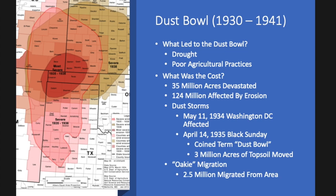Some 35 million acres of land were devastated as a result of the Dust Bowl and 124 million acres affected by wind erosion. Some of the worst dust storms occurred on May 11, 1934, when dust from the Midwest hit Washington D.C., New York, and other places, even into London. Then in April of 1935 — so-called Black Sunday — the term "Dust Bowl" came from a newspaper article describing a dust bowl in the center of the United States. During that Black Sunday blow, something like 3 million acres of dirt were moved across the United States.